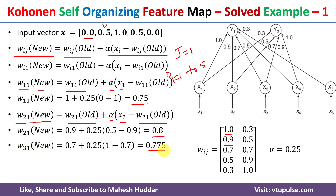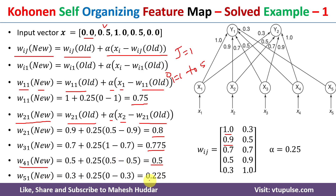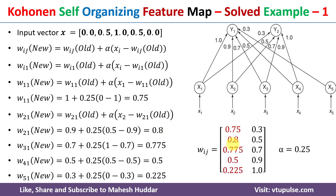Continuing: W_31(new) = 0.775, W_41(new) = 0.5, and W_51(new) = 0.225. Once all updated weights are calculated, we replace the old weights with the new ones. The old values 1.0, 0.9, etc. are replaced with 0.75, 0.8, 0.775, 0.5, and 0.225 respectively, forming the new weight matrix.